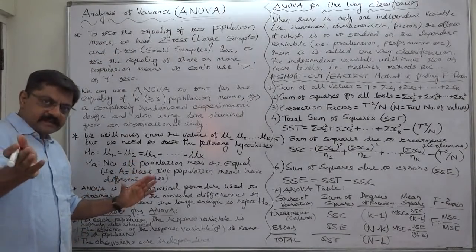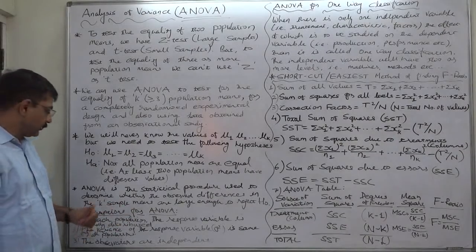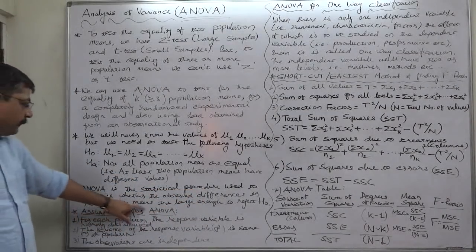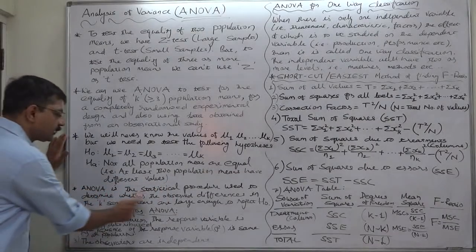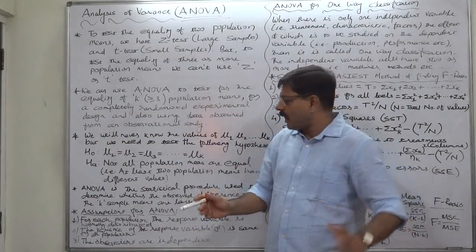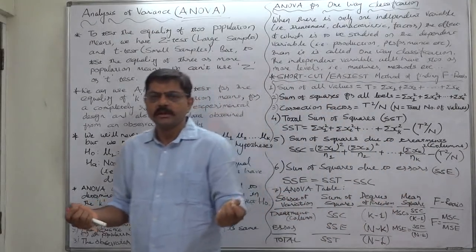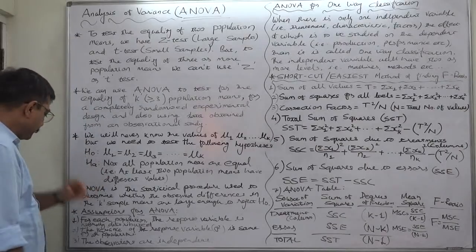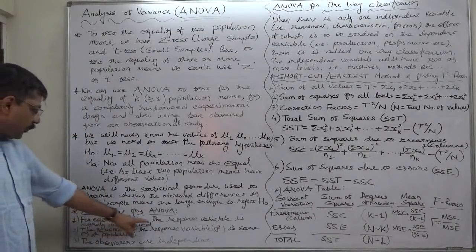There are three or more means, so we cannot use Z or T test. Only ANOVA is the way of testing this kind of hypothesis. ANOVA is the statistical procedure used to determine whether the observed differences in the K sample means are large enough to reject H0. It is not necessary that exactly point-to-point the means are equal; there may be smaller differences, but the difference should not be so significant that we have to reject the null hypothesis.